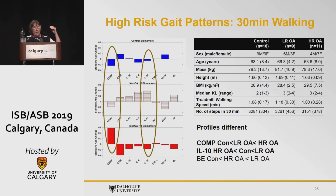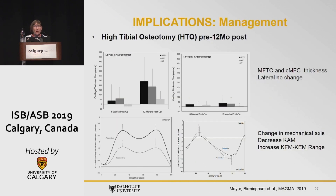The blue group was asymptomatic. The first biomarker was COMP — looking at degradation — and the high-risk group had the highest increase in that biomarker. Interestingly, the fifth biomarker was an anti-inflammatory biomarker, and the high-risk group actually had the lowest change in anti-inflammatory biomarkers, whereas the low-risk group had the highest change — which would be a positive response to exercise. There really does need to be more work trying to link biomechanics with imaging markers using MRI or chemical biomarkers.